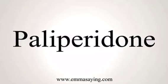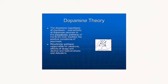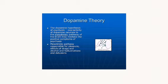Treatment of psychosis has been largely based on the dopamine hypothesis. Drugs in the phenothiazine class, as well as haloperidol, thioxanthenes, and others such as loxapine and pimozide, block dopamine receptors in the mesolimbic and mesocortical pathways.